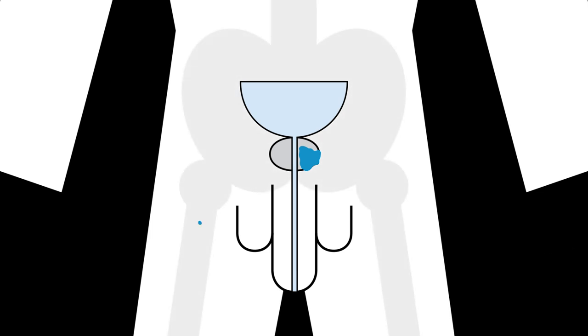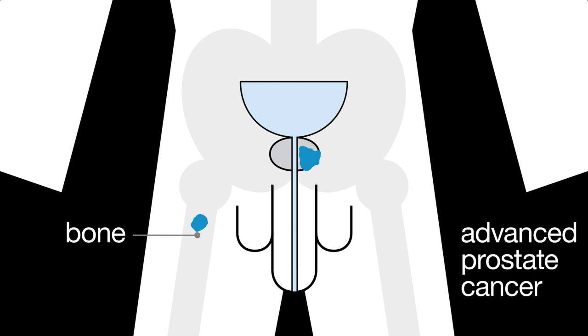Prostate cancer can also spread to other parts of the body, such as the bones. This is known as advanced prostate cancer. Advanced prostate cancer may cause problems and shorten a man's life.